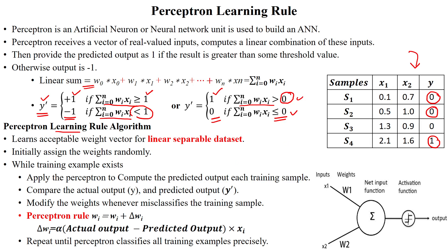The perceptron learning rule algorithm is used to learn an acceptable weight vector. For example, the weight vector may be initialized as w1 = 0.5 and w2 = 0.1. This algorithm finds suitable weights for a linearly separable dataset.